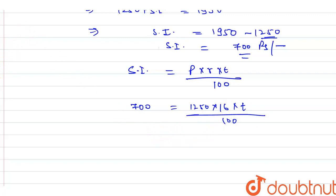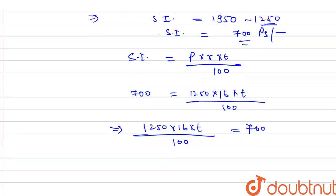Now what we will do? We will try to do the side change, we will try to do the reverse. So 1250 into 16 into t, this is t upon 100, it will be equal to 700.